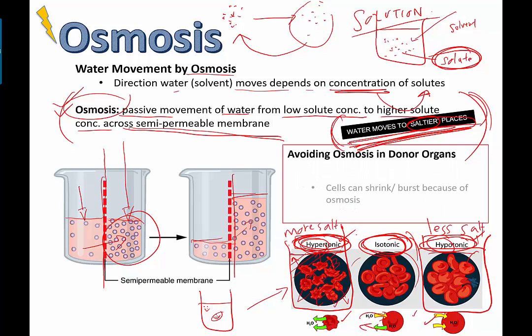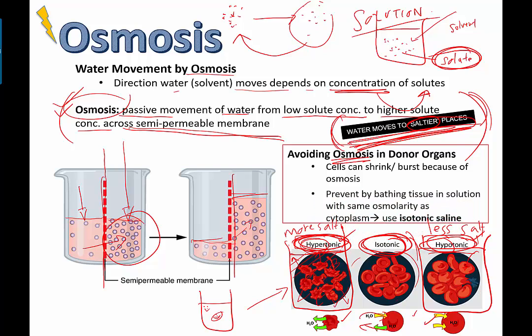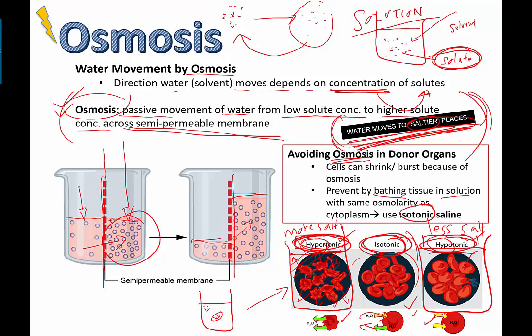Here's a real-life application. If you need to donate an organ and transport it four hours away - say I'm donating my kidney - they need to keep it well hydrated, but they can't just leave it on a plate. They have to put it in fluid, and that fluid concentration needs to match the fluid concentration inside the actual kidney. Otherwise, water is going to move into or out of the kidney, causing cell damage. So we need to avoid osmosis in donor organs because cells could shrink or burst. We need to bathe them in an isotonic solution with the same osmolarity - a word that means the concentration of solutes in a particular solution.